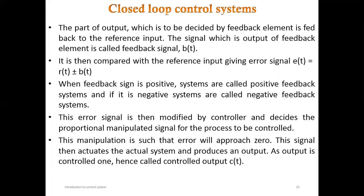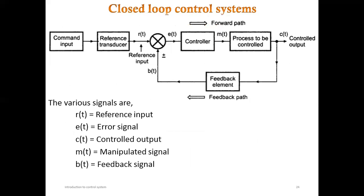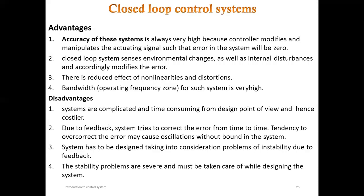In a closed loop control system, part of the output is fed back to the reference input, then compared with the reference input to give the error signal E(t) = R(t) ± B(t). The error signal is modified by the controller, which decides the manipulated signal for the process to be controlled. The advantage is high accuracy because the controller manipulates the actuating signal to obtain the desired output. The disadvantage is that the system is complicated and time-consuming to design.